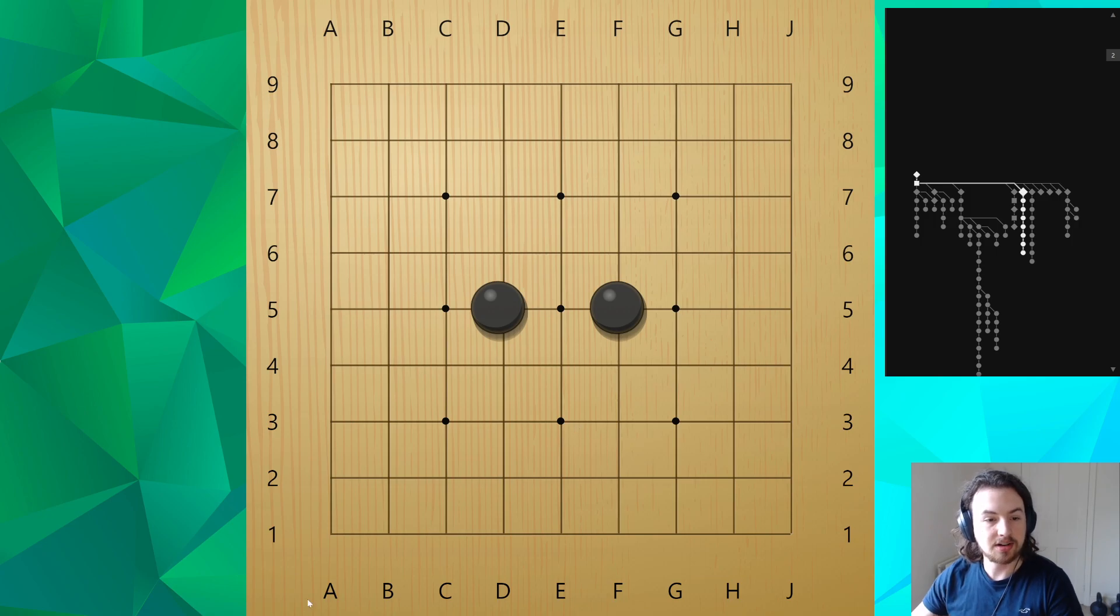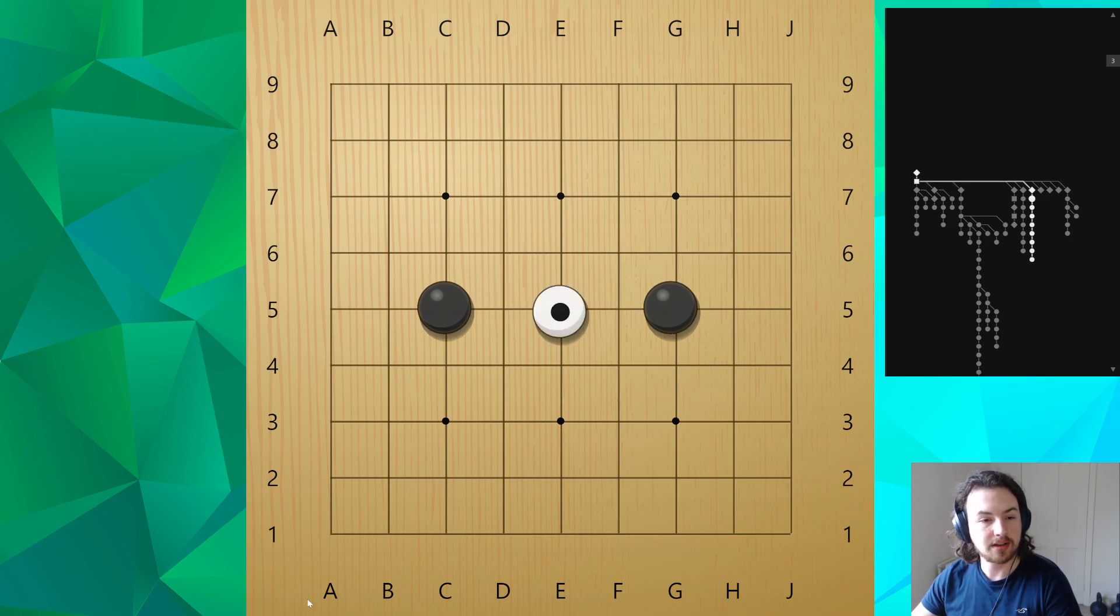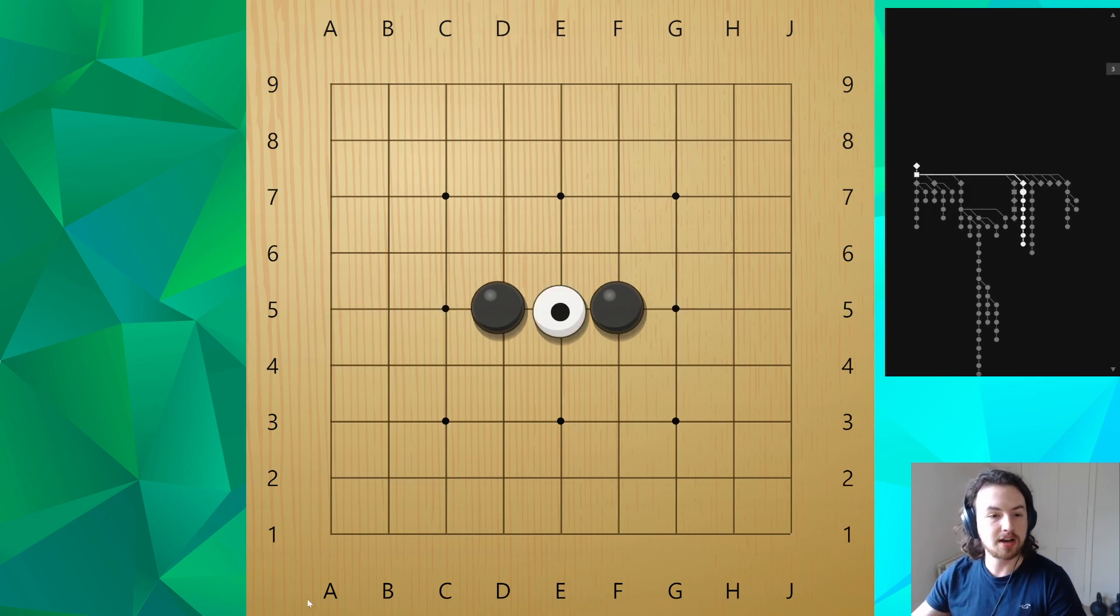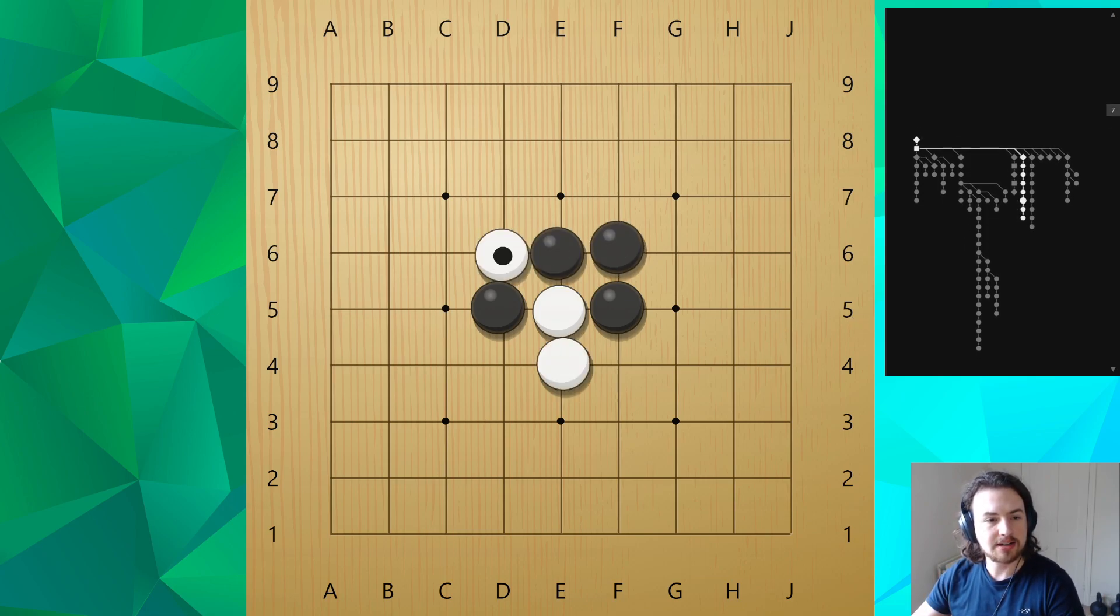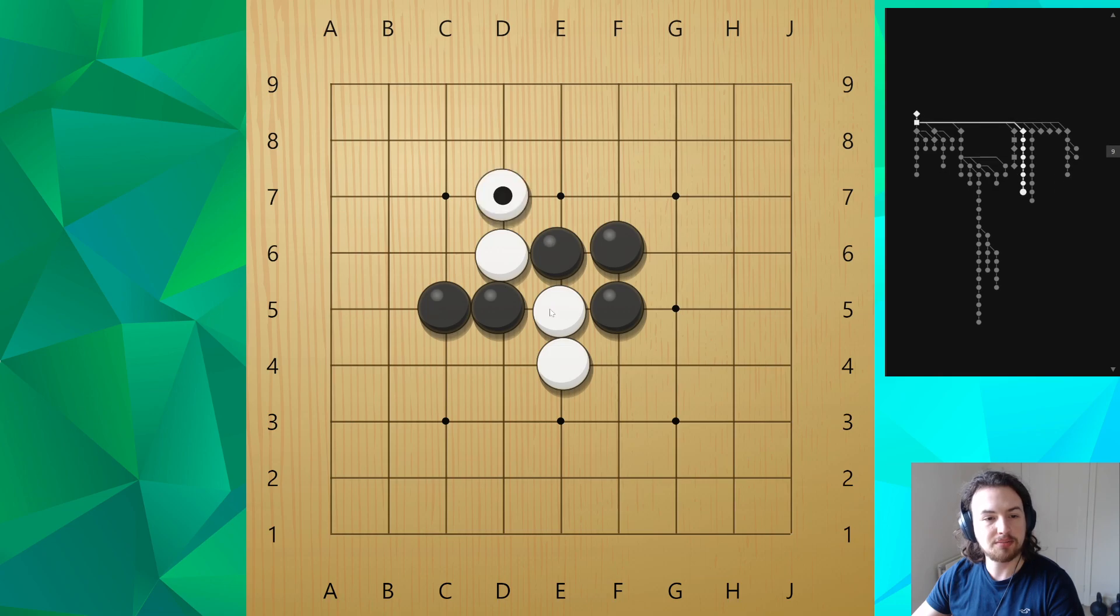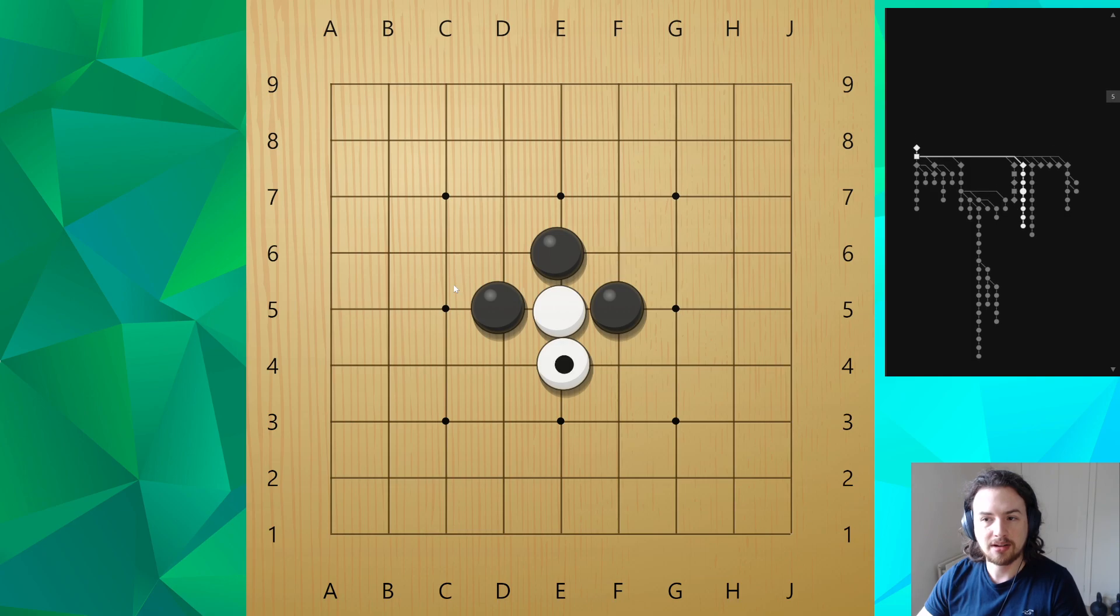So for instance, here, let's say white comes in between here. What happens? Well, black in Atari connect, and white might be able to come here. But although white was able to successfully separate black stones, it creates a fight. And that's not very clear about who got the better.